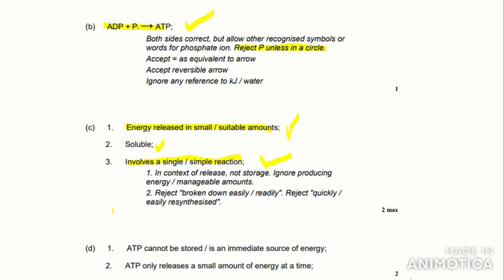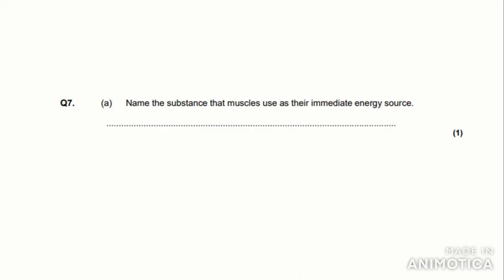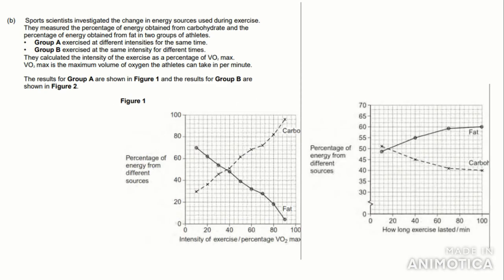The last part: 'ATP cannot be stored / is an immediate source of energy,' which we wrote. And 'ATP only releases a small amount of energy at a time,' which we wrote as well. The next question: 'Name the substance that muscles use as their immediate energy source.' That is a very easy question — obviously it's ATP. I'm not going to bother showing you the mark scheme as it just says ATP.